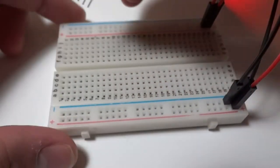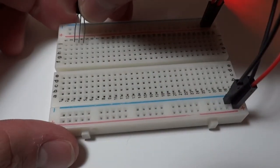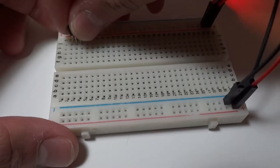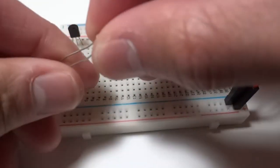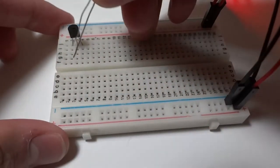Let's put that on the breadboard. Next, we take our photoresistor and connect it from 5 volt to the gate, which is the middle pin of the transistor.